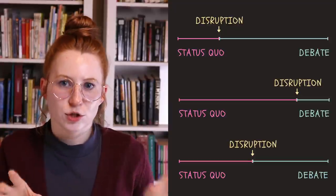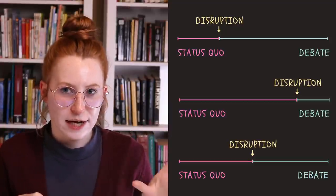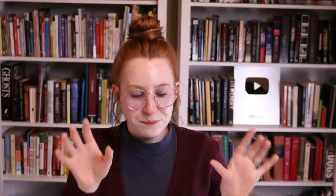We might think about the disruption of the status quo as a sort of floating plot point that can hit anywhere in the first quarter, but it splits that quarter into two distinct parts — the status quo and the debate. Where that disruption hits is completely up to you and dependent on your story. In the previous video we talked about reasons why you might need a longer or shorter status quo, so if you're not sure where you want that disruption to occur, you might find that video more helpful in determining that.